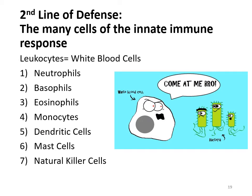In addition to those molecules, the second line of defense in innate immunity also has various white blood cells: neutrophils, basophils, eosinophils, monocytes, dendritic cells, mast cells, and natural killer cells. Keep in mind that the number of these leukocytes in your patient's blood will directly correlate with the stage of disease. We mentioned that white blood cell counts can help us determine whether an infection is bacterial or viral, so now we're going to go through each of these types of cells individually and see what exactly they do for us during immunity.